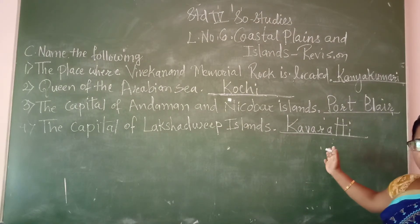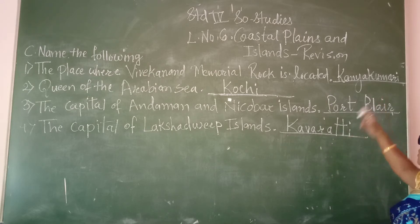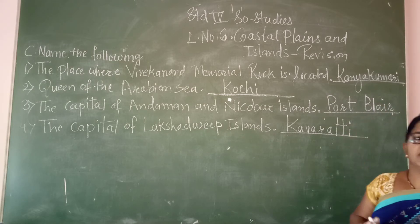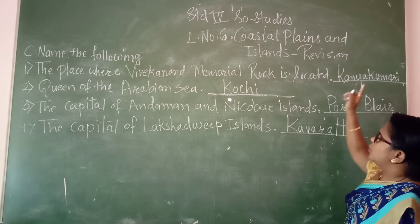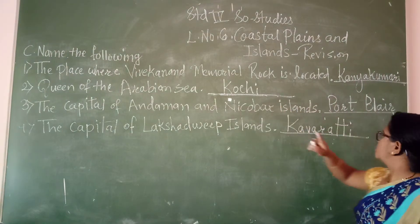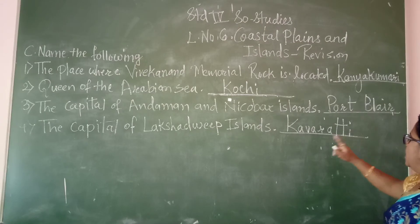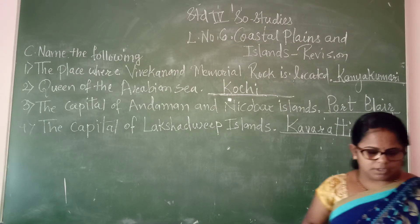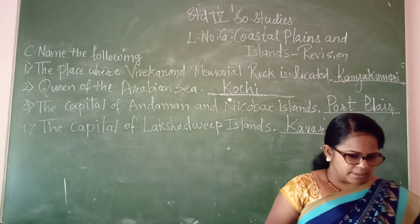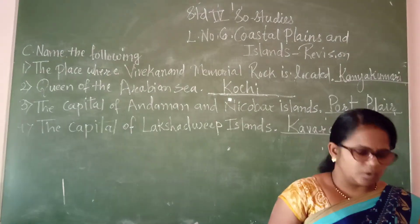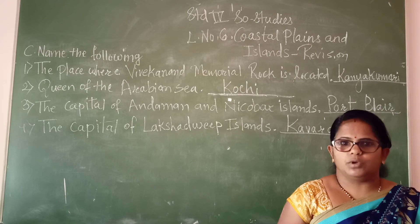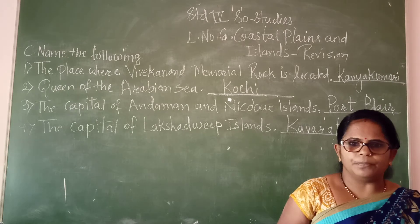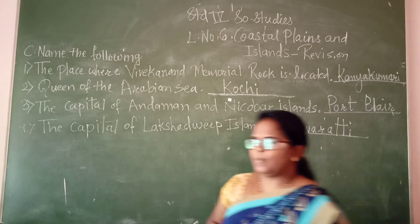Write down properly and learn the spellings of the answers: Kanyakumari, Kochi, Port Blair, Kavaratti. In the next period, we are going to answer the following questions. Thank you.